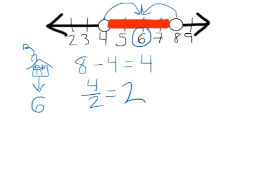Now we're trying to figure out how far these values are from 6, because absolute value is talking about the distance from home base. So we're looking for how far a value is from home base. In this case, we've already figured that out — it's 2. So we can take our home base and our distance from home and incorporate them into our absolute value inequality.